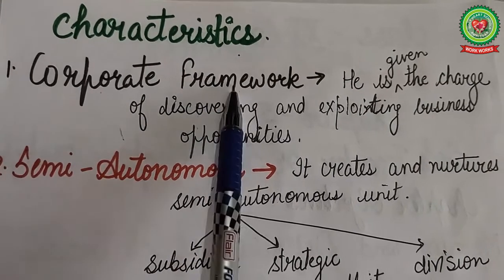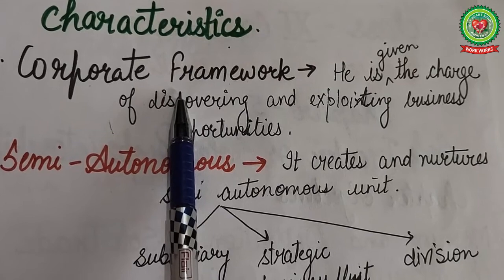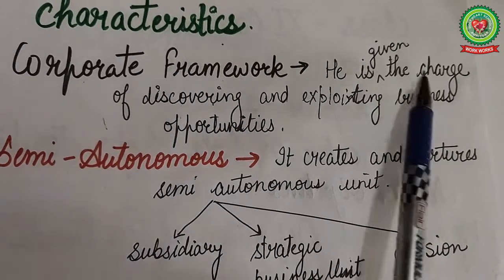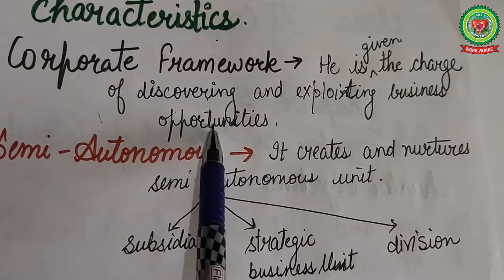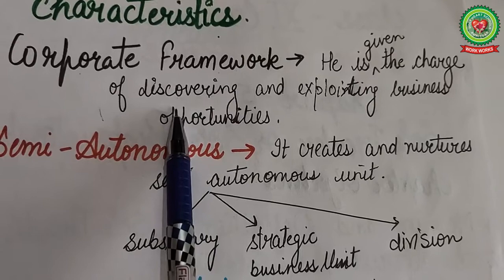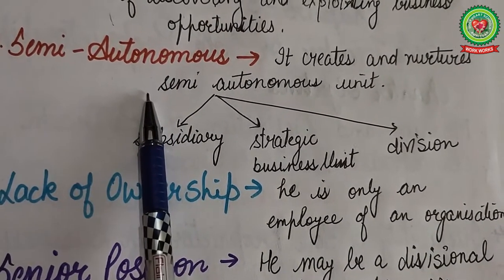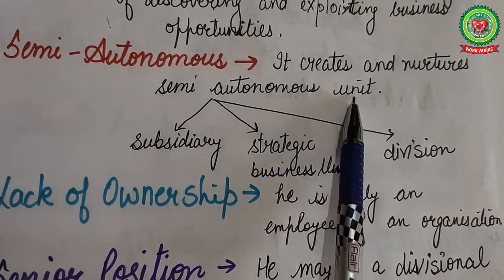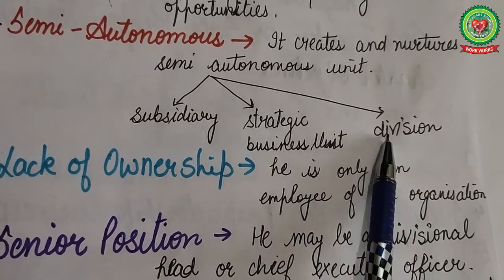Now the characteristics of intrapreneurship. First is corporate framework — intrapreneurship occurs within the framework of an existing company. The intrapreneur is given the charge of discovering and exploiting business opportunities in an already functioning, large and diversified organization. Second is semi-autonomous — intrapreneurship involves creating and nurturing a semi-autonomous unit, which may be a subsidiary, a strategic business unit, or a division.